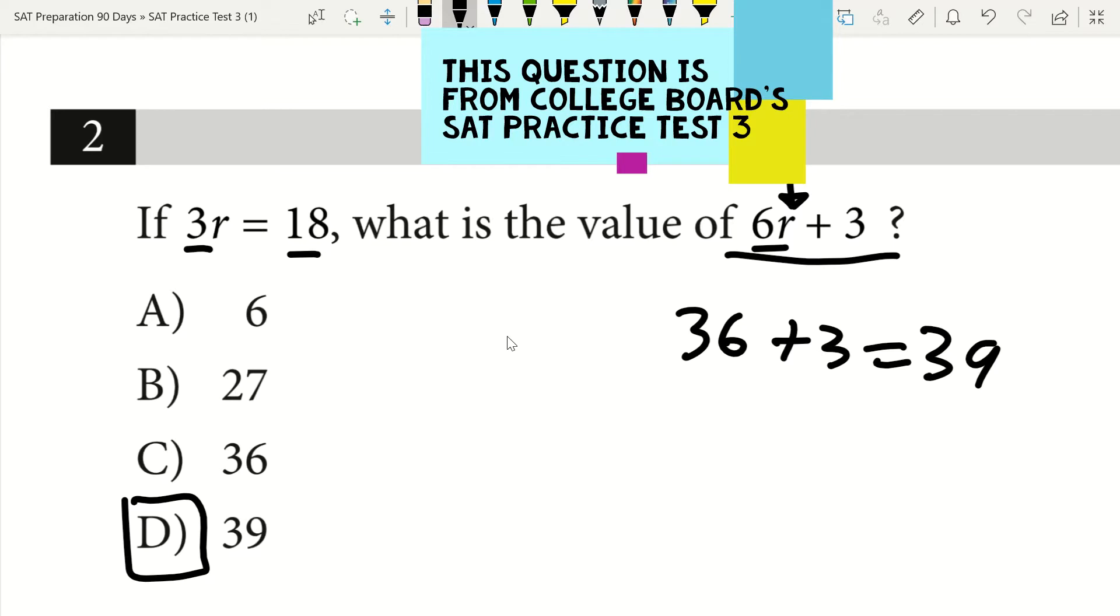That takes a lot, lot less time than if you divide each side by 3 and solve for R and then plug R in, okay? So that's one tip you can use to save time on the SAT math section.